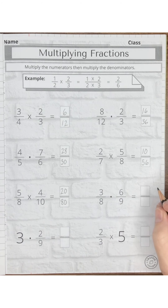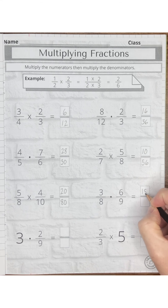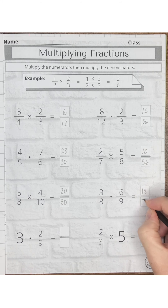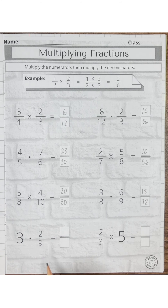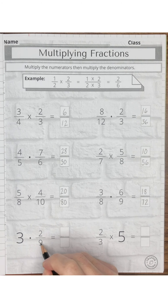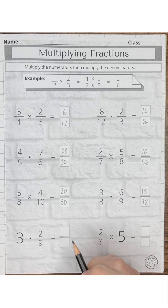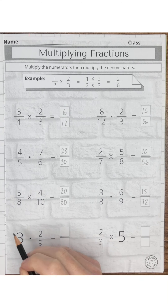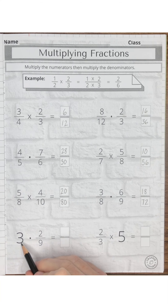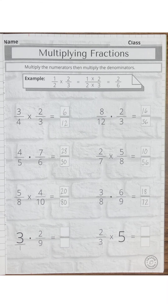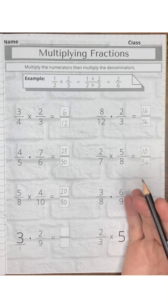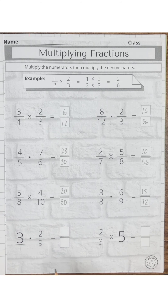Three-eighths times six-ninths gives 18 over 72. Now we have a whole number problem: 3 times two-ninths. A fraction like two-ninths means 2 divided by 9. If we have a whole number, we can convert it into a fraction by writing 3 over 1 — dividing 3 by 1 gives us 3. So we solve: 3 times 2 is 6, and 1 times 9 is 9.